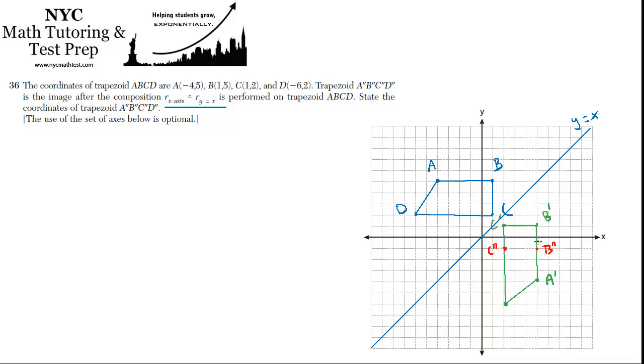A is currently 4 units below the x-axis. It's going to flip up and be 4 units above the x-axis. That's A double prime. D is 6 below. Now it's going to be 6 above. This is where D prime will ultimately be. I missed it before. This is D prime, and this is D double prime up here.